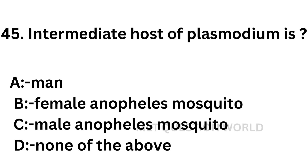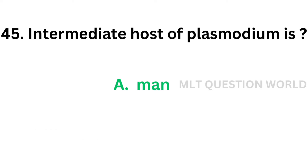Question number 45: Intermediate host of Plasmodium is — option A: Man, option B: Female Anopheles mosquito, option C: Male Anopheles mosquito, option D: None of the above. The definitive host of Plasmodium is the female Anopheles mosquito, and the intermediate host is man. So the correct answer is option A, man. Intermediate host of Plasmodium is man.